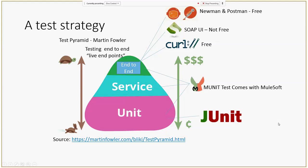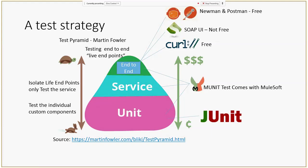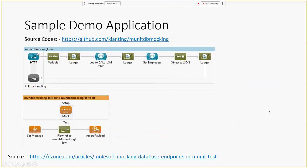So to summarize: end-to-end testing tests the integration with live endpoints; unit testing tests custom components; and service testing isolates all the endpoints and tests the unit of build done for that integration project. I have created a sample demo application to show you how MUnit testing works.